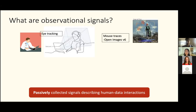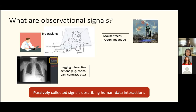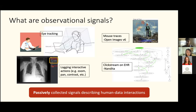Observational signals are those additional signals that capture that interaction, which may provide additional information useful for machine learning supervision. An example is eye tracking data — a radiologist might have looked in a specific location for a longer period of time. Another could be mouse traces, where an expert uses their mouse to navigate around the image. We can also log interactive actions like zooming in the chest x-ray or changing the contrast, as well as click stream data — what they're clicking on in the system.